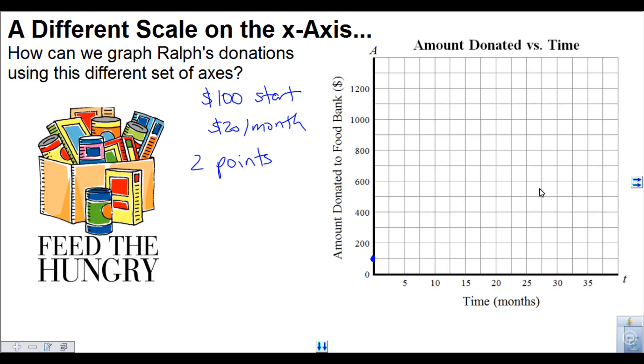Ideally we want to find a point somewhere far on the right-hand side so that it can be accurate. If we draw dots too close together and then draw our straight line not very accurately, then there's going to be quite a discrepancy on the right-hand side of the graph. So let's say for instance, I'll just pick 30 months here. We need to find out how much money Ralph donated in total after 30 months.